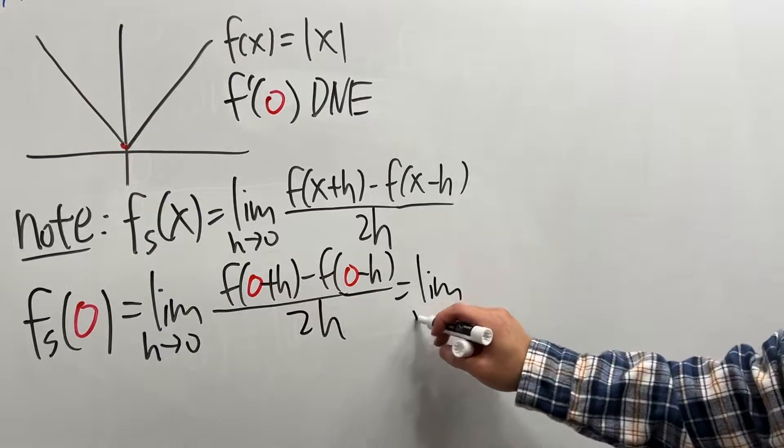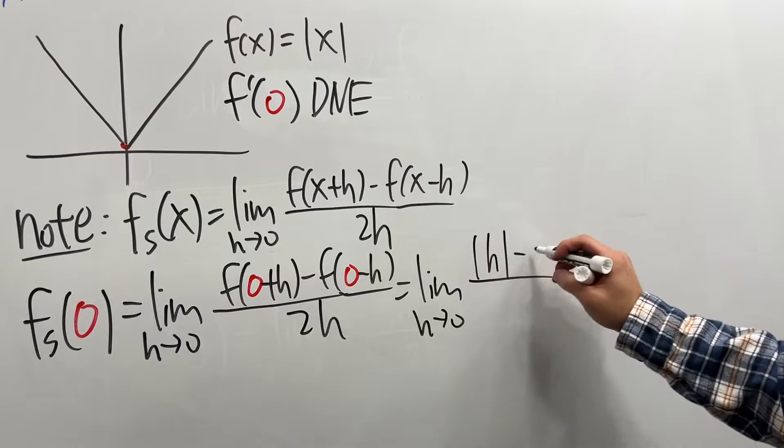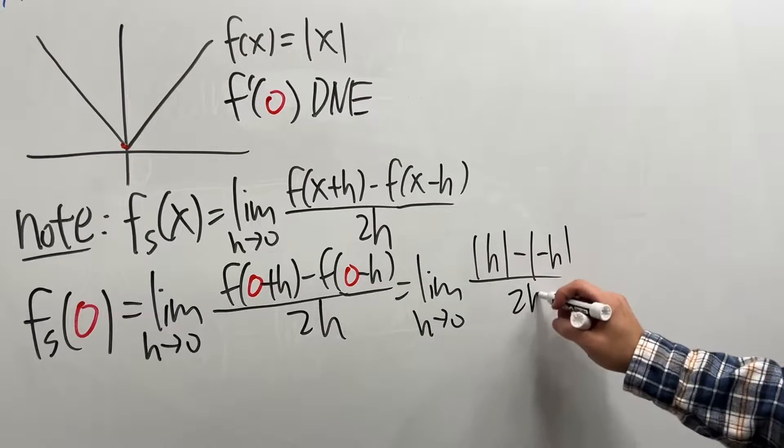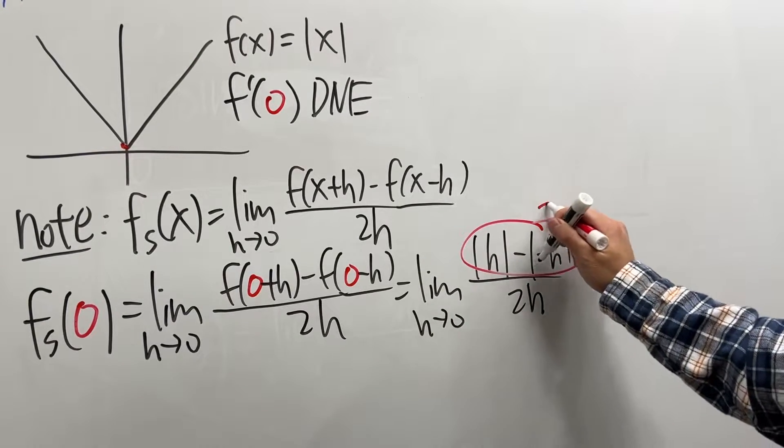And this right here is the limit as h approaches 0 of |h| - |-h| over 2h. But this is just the absolute value of h. In fact, on the top, it just gets 0.